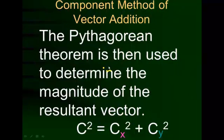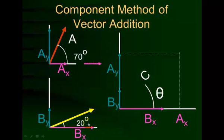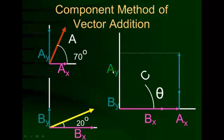We'll show this graphically, then use the Pythagorean theorem to find the actual length of the hypotenuse. We have our two original vectors to add together, and we're not using graph paper. We bring the vertical components from both and lay them on the y-axis, and bring the horizontal components and put them on the x-axis. That gives us the total vertical and horizontal components of the resultant — the blue vector.